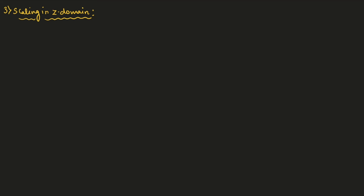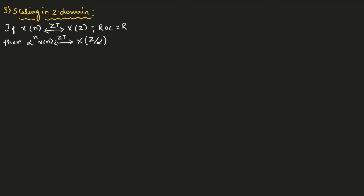The third property is scaling in the Z domain. It states that if for x of N we perform Z transform, we will get X of Z with ROC equal to R. Then for alpha to the power of N times x of N, if we perform Z transform, we will get X of Z divided by alpha, with ROC equal to the magnitude of alpha times R. Here alpha is a complex number.